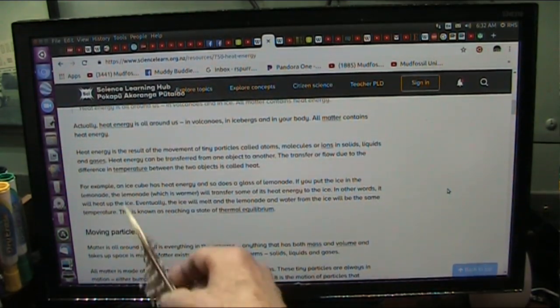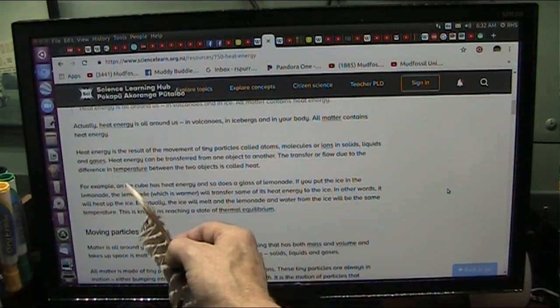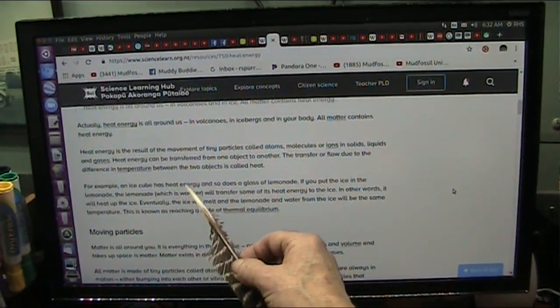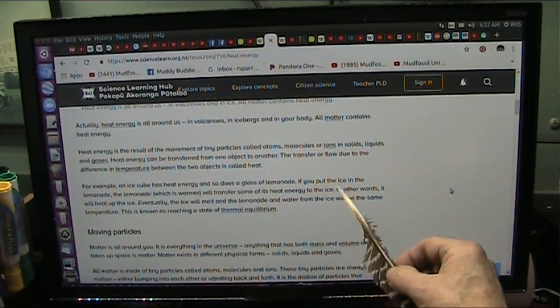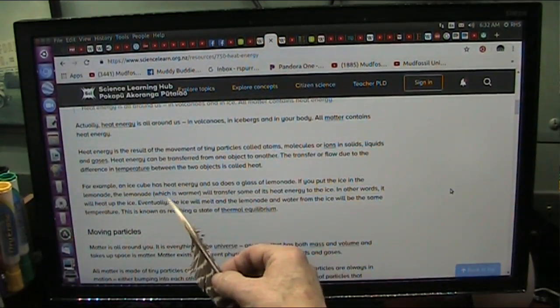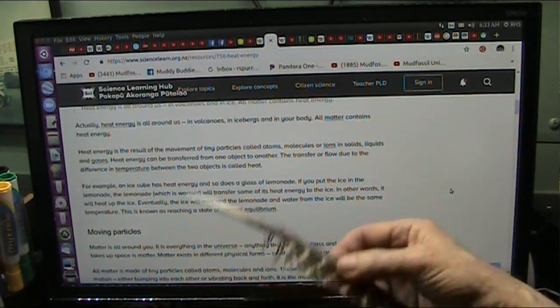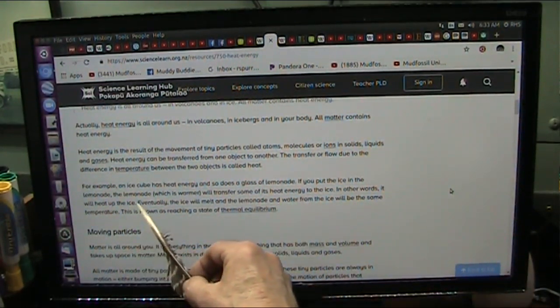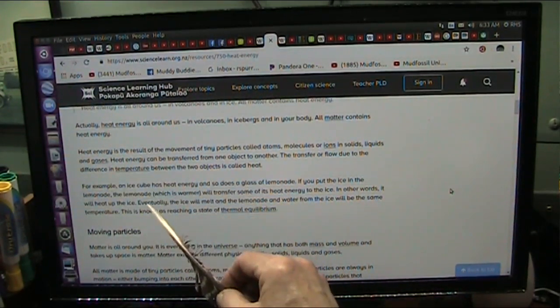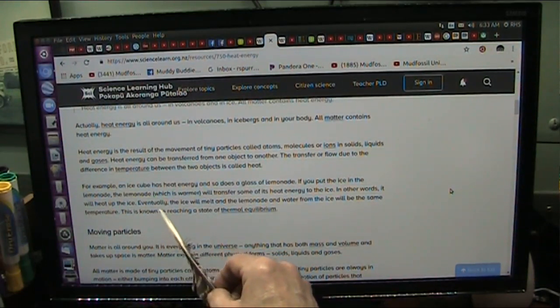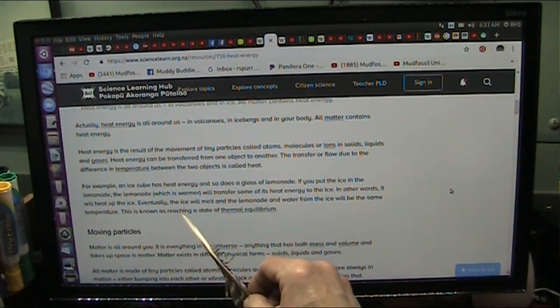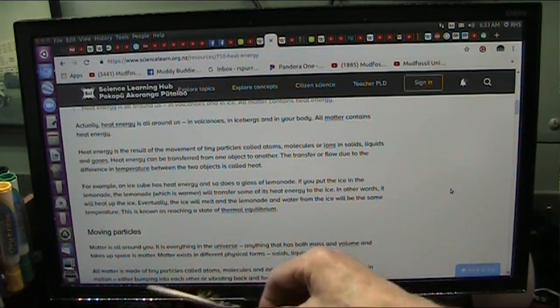For example, let's just go with what they say. An ice cube has heat energy, and so does a glass of lemonade. If you put the ice in the lemonade, the lemonade, which is warmer, will transfer some of its heat energy to the ice. In other words, it will heat up the ice. Eventually, the ice will melt, and the lemonade and water from the ice will be the same temperature. This is reaching a state of thermal equilibrium.